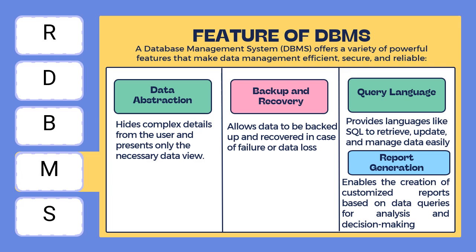Data abstraction hides complex details from the user and presents only the necessary data view. It hides how data is stored and maintained internally. Users interact with a simplified view of data without knowing the internal implementation. There are three levels of abstraction: physical level — how data is actually stored; logical level — what data is stored and relationships between data; and view level — what the user sees. For example, a student sees only their own record, not the entire database.